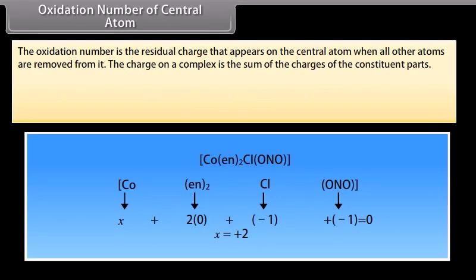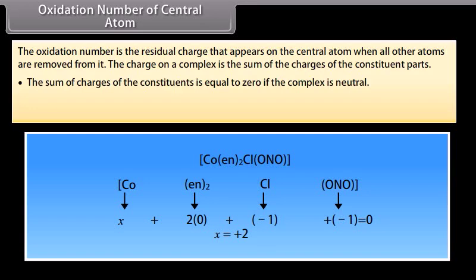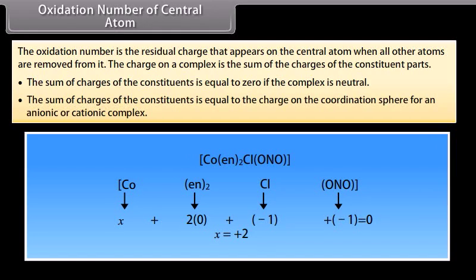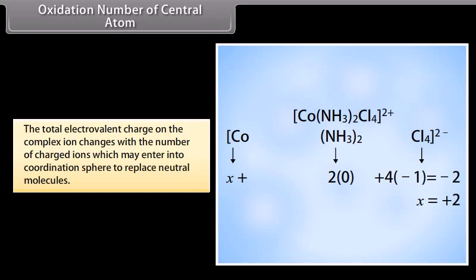Oxidation Number of Central Atom: The oxidation number is the residual charge that appears on the central atom when all other atoms are removed from it. The charge on a complex is the sum of the charges of the constituent parts. The sum of charges of constituents is equal to zero if the complex is neutral. For an anionic or cationic complex, the sum of the charge on the coordination sphere determines the overall charge, which changes with the number of charged ions entering the coordination sphere to replace neutral molecules.